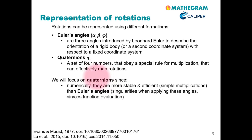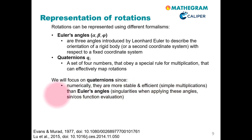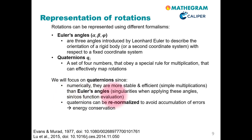We will focus on these quaternions, and there are multiple reasons. First, they are numerically more stable and efficient. The reason is that we just have to perform simple multiplications. If we had decided to use Euler angles, we would have to tackle singularities and perform computationally expensive sine and cosine function evaluations. The second point is that quaternions can be re-normalized to avoid accumulation of errors.